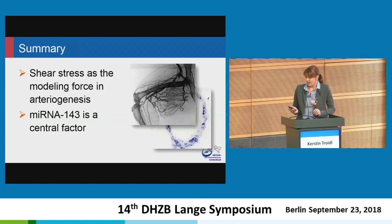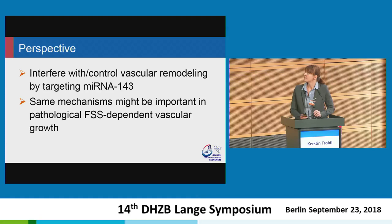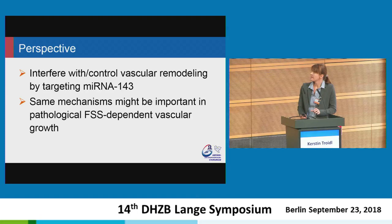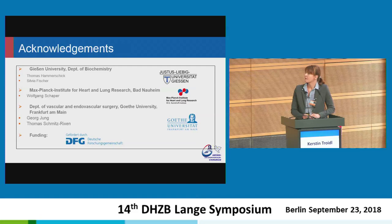In summary, we found that shear stress is the modeling force in arteriogenesis and microRNA-143 seems to be a central factor. The translational perspective is that we can interfere with or control vascular remodeling by targeting microRNA-143, and mechanisms important in pathological fluid shear stress-dependent vascular growth may be similar. I would like to thank my collaborators from Gießen, Frankfurt, and Badenauheim, and thank you for your attention.